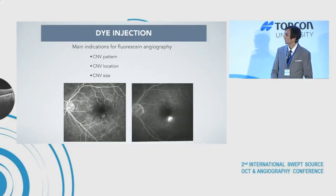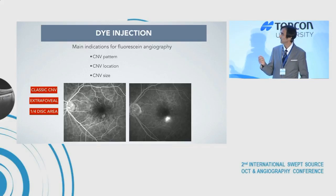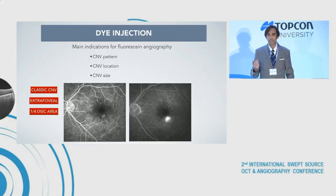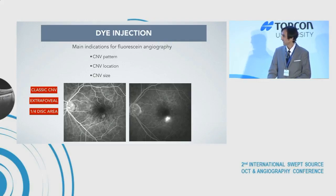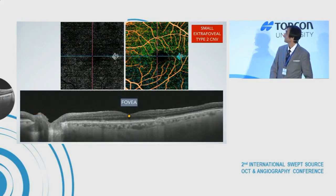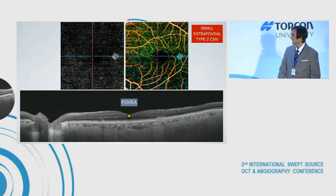Conventional angiographies use dyes. In fluorescein angiography, we can determine the pattern of the CNV, the location, and the size. But nowadays, with modern OCT angiography, we can assess the same without dye injection. In this case, you can see a very small extrafoveal type 2 CNV, which can be very nicely assessed only with OCT angiography without dye injection.